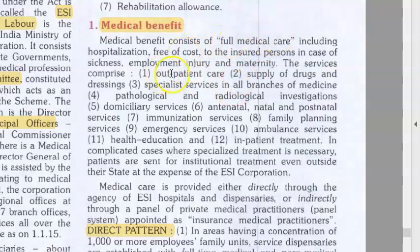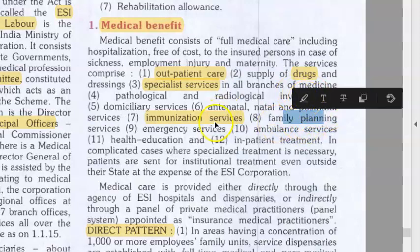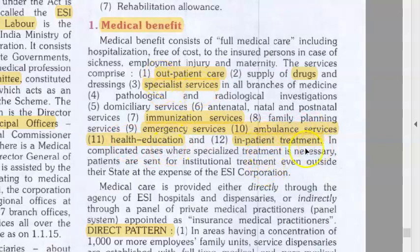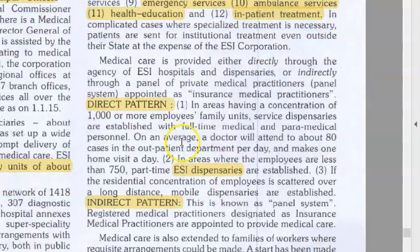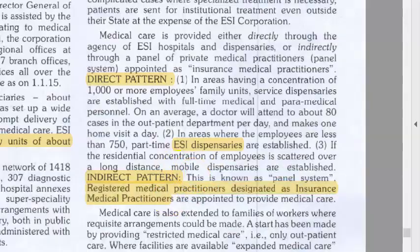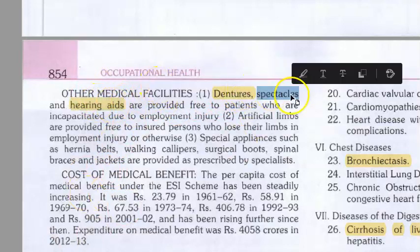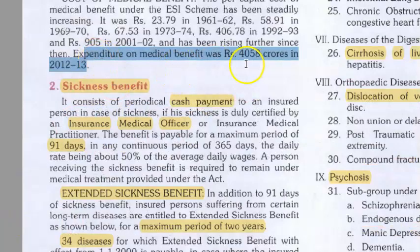Coming to medical benefit: it includes outpatient care, drugs, dressings, specialist services in all branches of medicine, radiological and pathological services, immunization, antenatal, natal and postnatal care, family planning, emergency services with ambulance, health education, and inpatient care. Medical benefit is delivered directly through ESI hospitals, or indirectly through registered medical practitioners designated as insurance medical practitioners. Additional facilities like dentures, hearing aids, and spectacles are provided free to patients incapacitated due to employment injury. ESI Corporation spent around ₹4,058 crores on medical benefit.